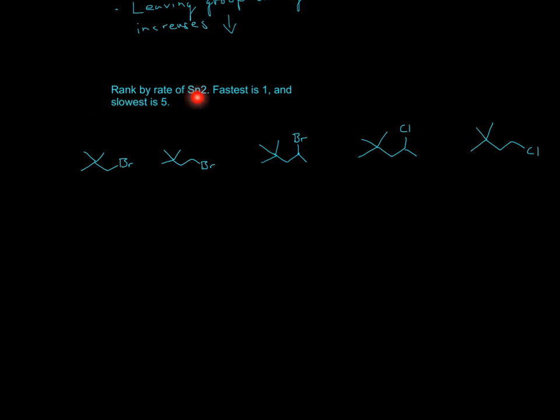So for this problem, it says ranked by rate of SN2, fastest is 1, slowest is 5. So we have these five compounds, so try this out on your own, and then I'll explain it.